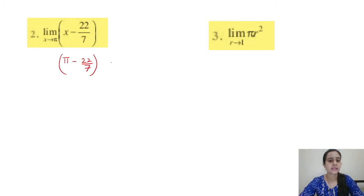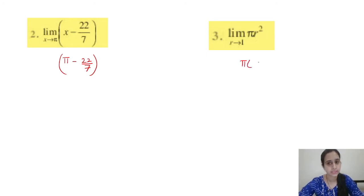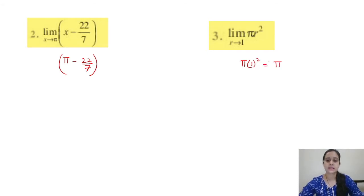Question 3: limit x tends to 1, πr². You have to put the value r = 1 here. So π into 1 squared equals π. The answer is π.